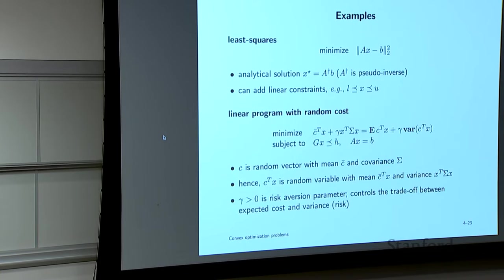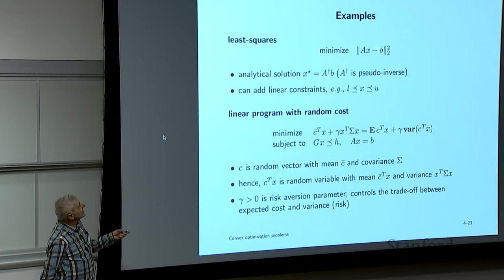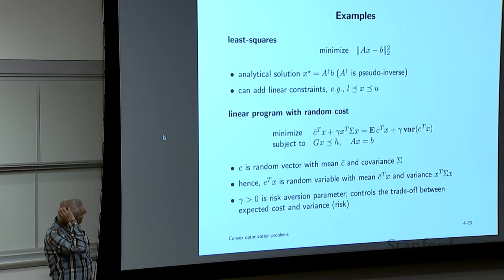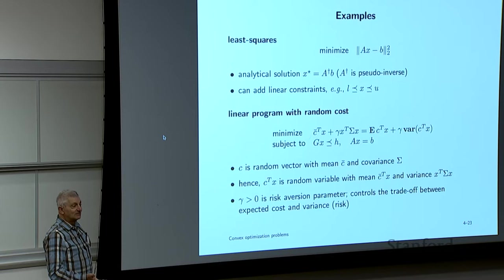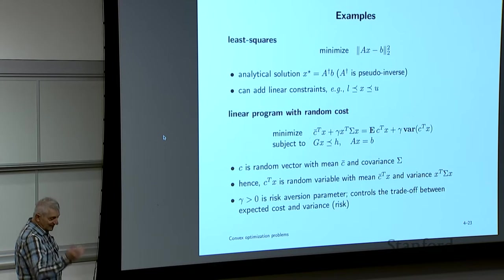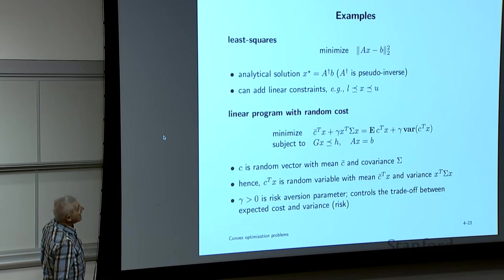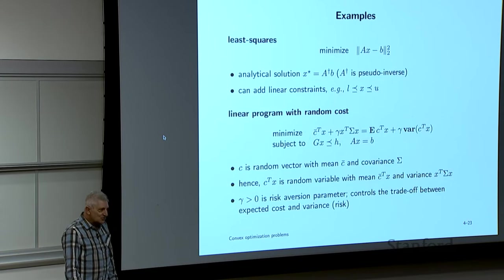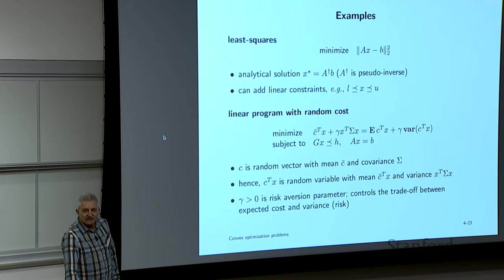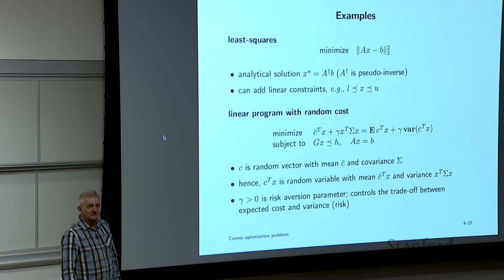Without constraints, QP reduces to least squares, solved by linear algebra. But you can add linear constraints and the problem remains entirely tractable. For example, do least squares where the entries of x must be non-decreasing: x₁ ≤ x₂ ≤ x₃ ≤ …